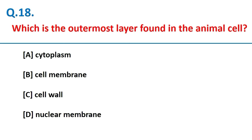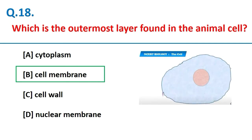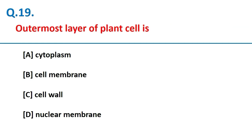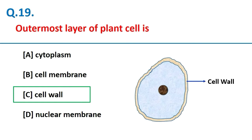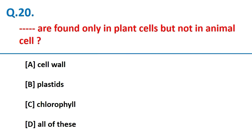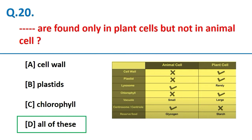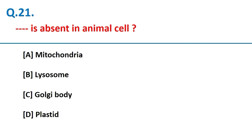The outermost layer of an animal cell is the cell membrane, also called the plasma membrane. The outermost layer of a plant cell is the cell wall. Structures found only in plant cells but not in animal cells include the cell wall, plastids, and chlorophyll. Plastids are absent in animal cells.